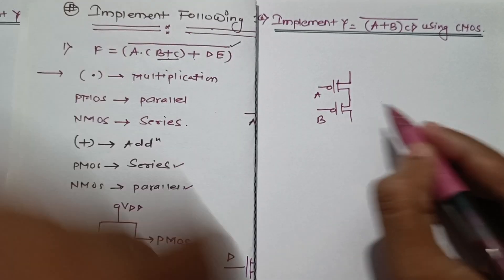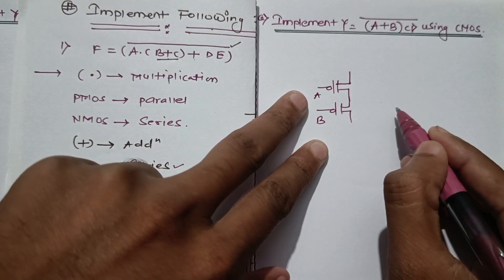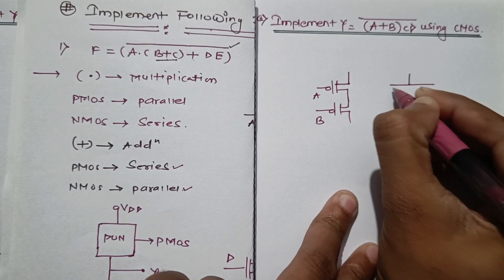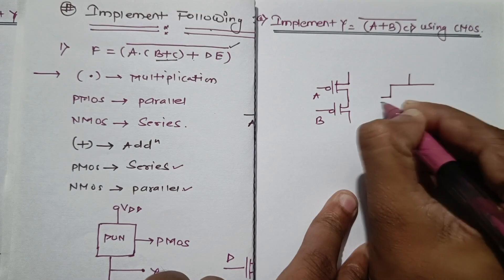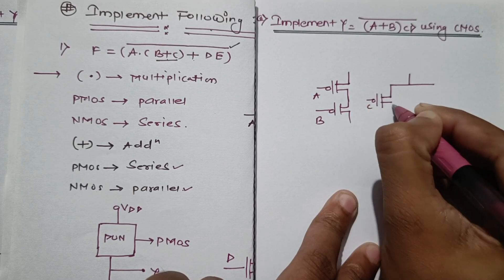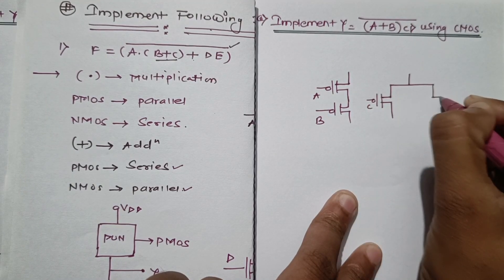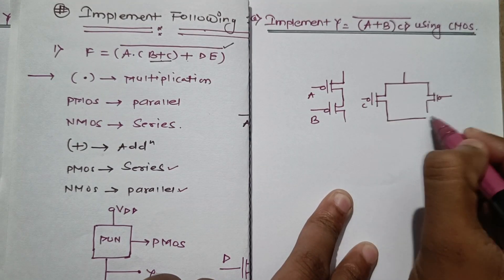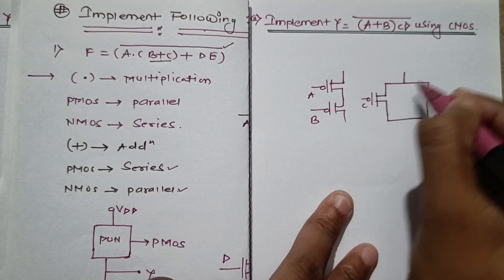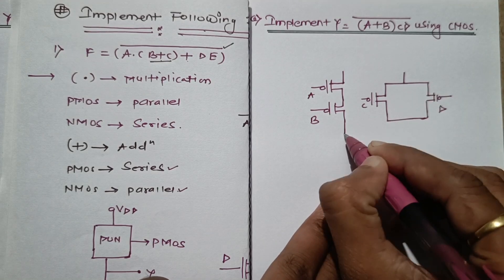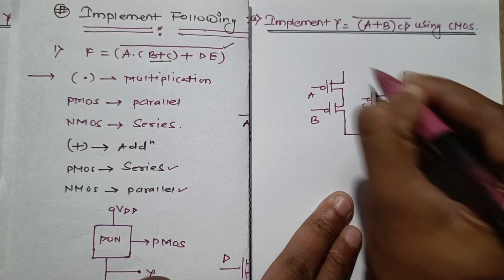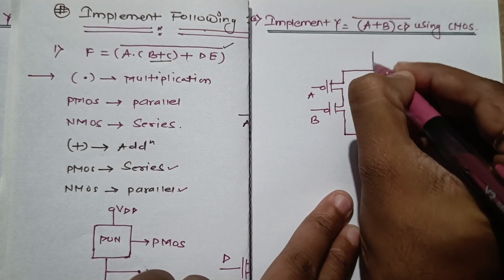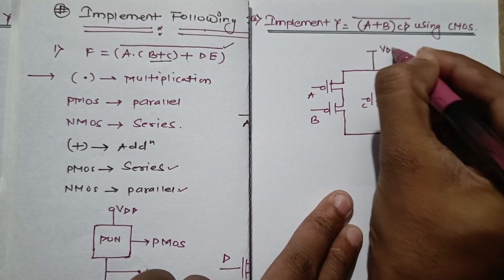Next, the multiplication operator with C and D. For multiplication, PMOS transistors will be in parallel. So this combination is now in parallel with C and D. We draw C here and D here — C and D are in parallel — and this entire structure is again in parallel with A and B. VDD is assigned at the top. This completes the PMOS implementation.